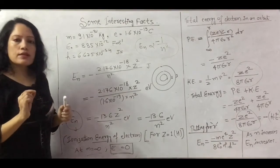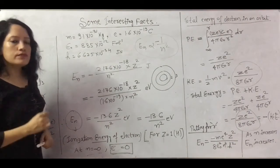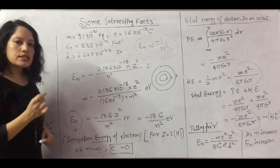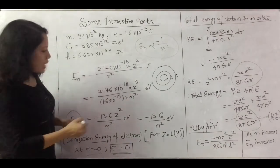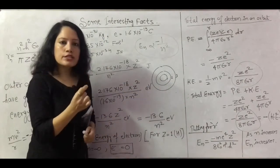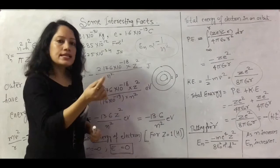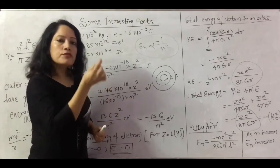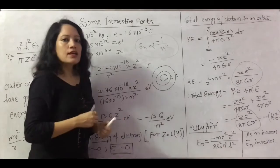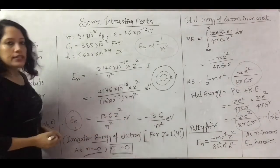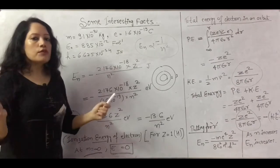We need to understand what this energy is all about. This energy represents the minimum energy required to remove an electron from its orbit. As the electron starts moving away from the nucleus, its binding energy decreases, meaning it becomes more free and gains energy. When n approaches infinity, the energy approaches zero, which represents the ionization condition — the electron is completely free from the nucleus.